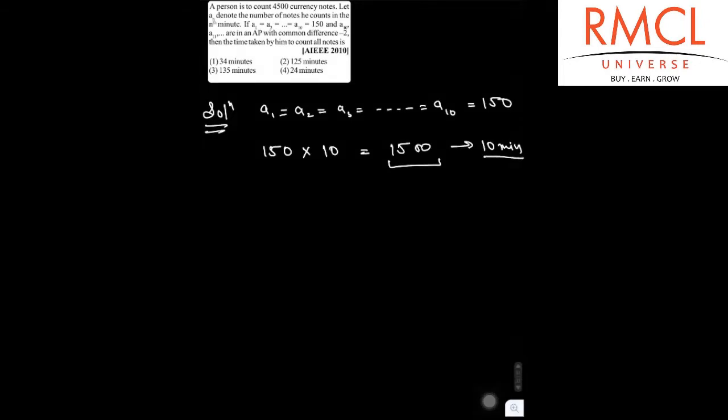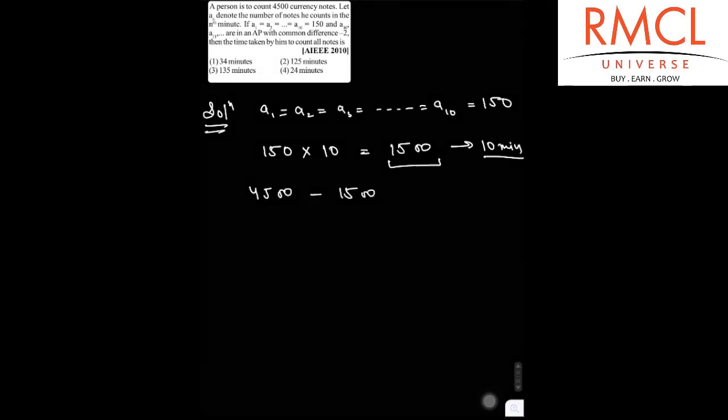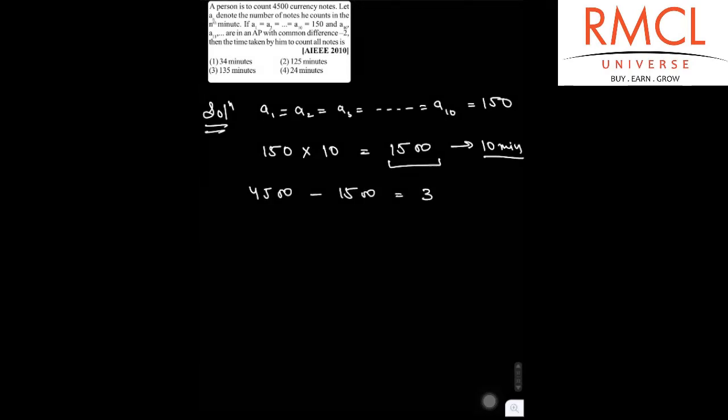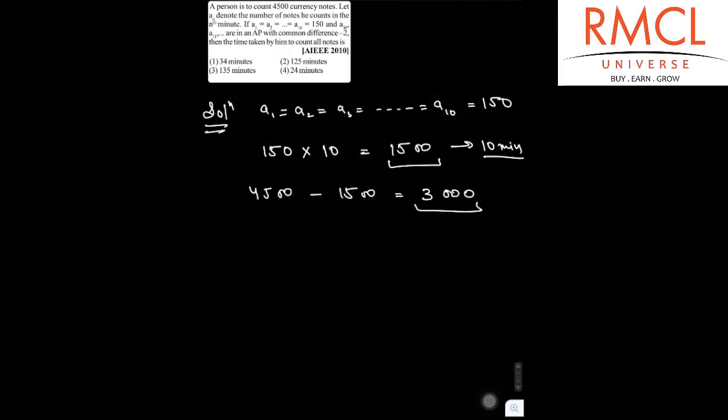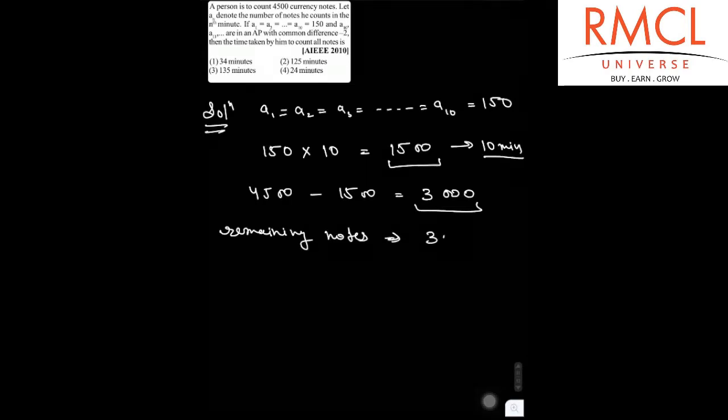So the remaining currency notes will be 4500 minus 1500, so that is 3000. So the remaining notes will be 3000.